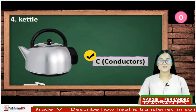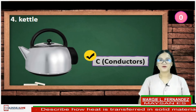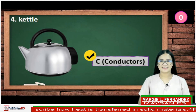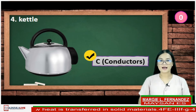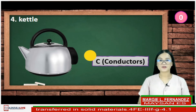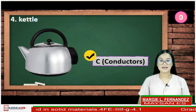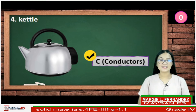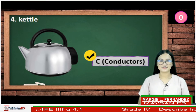If your answer is C, you are fantastic! The kettle was made out of metal. Metals are good conductors of heat, therefore the kettle is classified as a conductor.